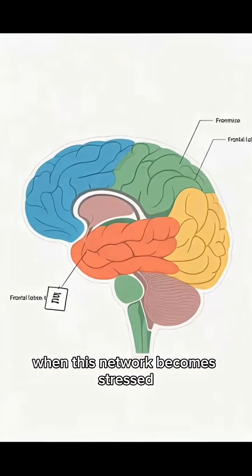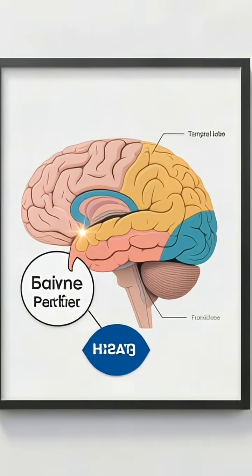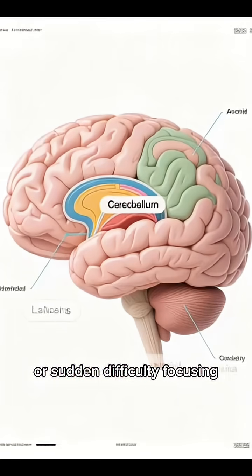When this network becomes stressed, dehydrated, or overloaded, your brain begins to lose efficiency. That's when you feel brain fog, memory lapses, or sudden difficulty focusing.